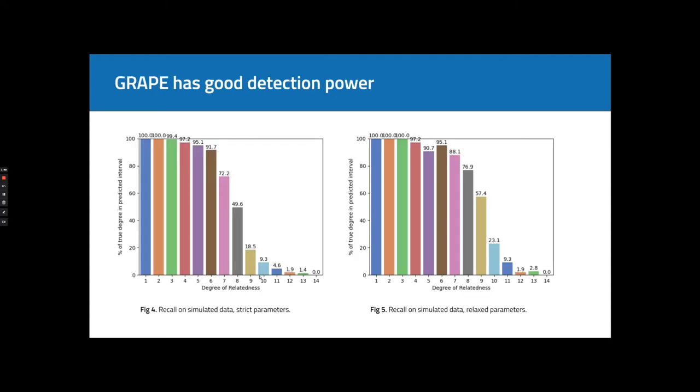And then let's talk about results. To check the accuracy of our pipeline, we simulated a few pedigrees using unrelated individuals from 1000 Genomes genotype data and PEDSIM simulation software. On the left, you can see how well our pipeline detects relatives with a strict control for false positive rate.